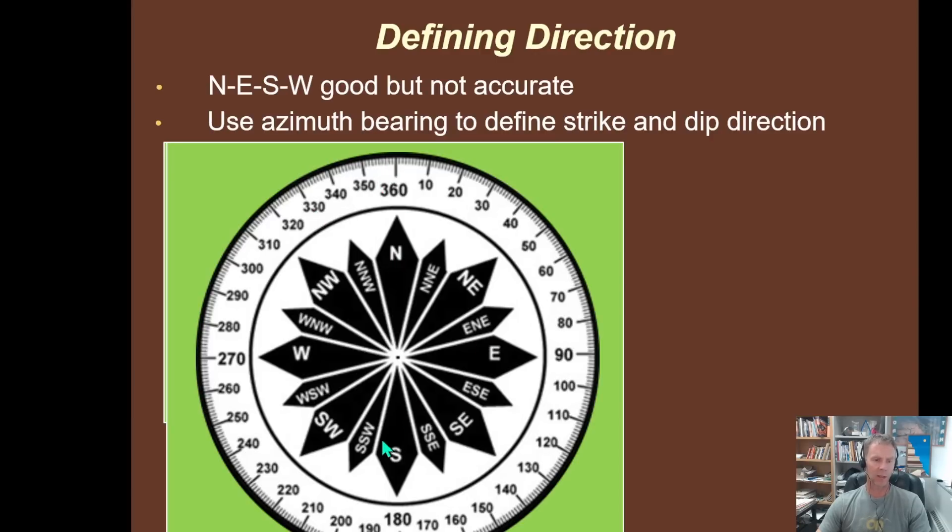So instead of thinking of things as directionally north and east and southeast and northwest, we actually break the compass rows up, because it's a circle, into degrees - 360 degrees in a circle. We start at north, which is essentially zero, and we rotate clockwise around the compass rows. And each little unit there is a different degree of a bearing, of a direction, an azimuth bearing. So notice that east is 90, south is 180, west is 270.